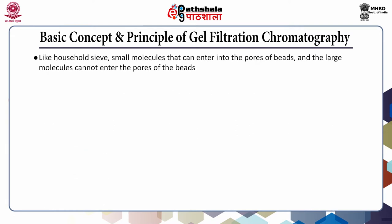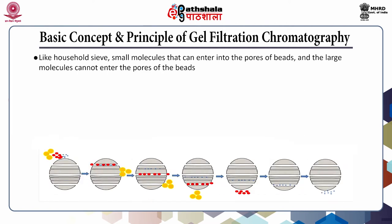Like a household sieve, small molecules can enter into the pores of beads and large molecules cannot enter the pores. In this slide there are three kinds of biomolecules: yellow, red, and blue. The red and blue molecules can pass through the pores, but the yellow molecules cannot, so the yellow molecules go between the beads and reach the bottom of the column earlier. That is why this is called molecular sieving.